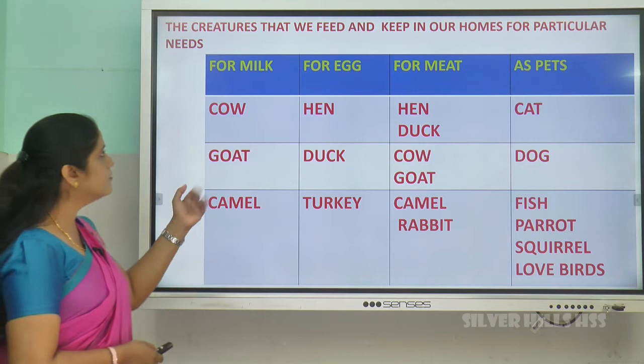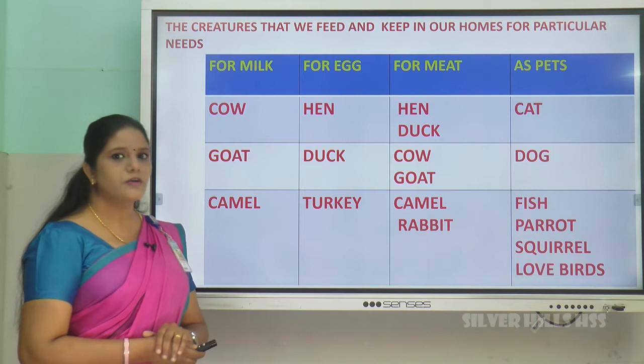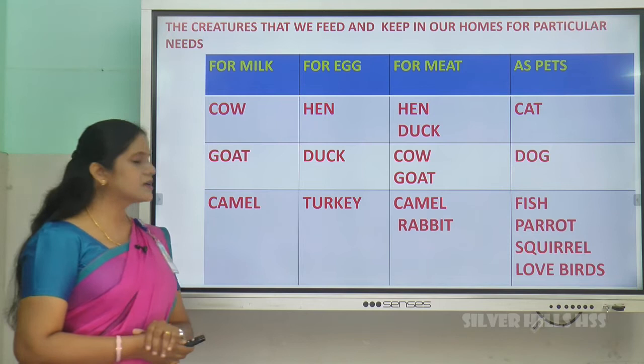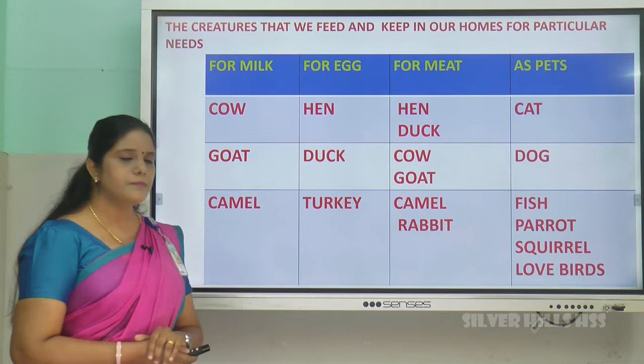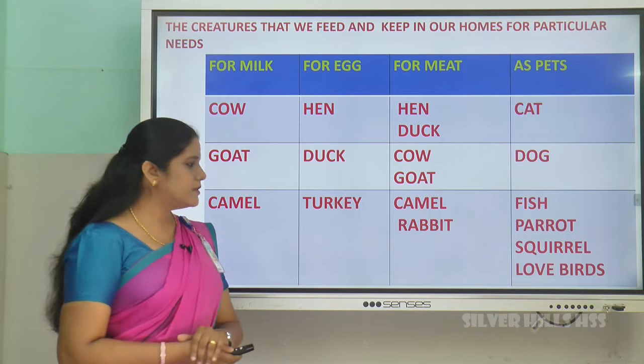For eggs, we keep hen, duck, turkey, etc. in our homes. For meat, hen, duck, cow, goat, camel, rabbit — these are some animals we keep in our home for their meat.